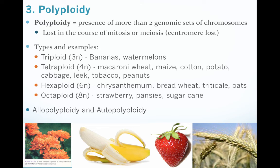This addition can actually come through the loss or gain of genetic material in mitosis and meiosis as well. When it comes to polyploidy, the types we're going to concentrate on most are triploid, tetraploid, hexaploid, and octoploid, because this is where a lot of our very popular crops have been developed. For example, bananas actually have three copies of genetic material, so they're triploid in nature and not diploid.